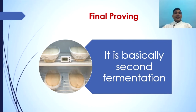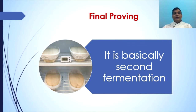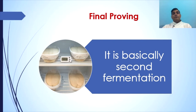Final proving is basically the second fermentation. The purpose of the final proof is to relax the dough from stress received during molding and to facilitate gas production in order to give volume to the loaf. It also changes the tough gluten to a mellow and extensible structure. Proving is a continuation of yeast fermentation that increases the volume of the shaped dough. Proving temperatures are generally higher than fermentation temperatures. Under-proving results in poor volume and dense texture, while over-proving results in coarse texture and some loss of flavor. French bread is proved for a longer time to achieve its characteristic open texture.